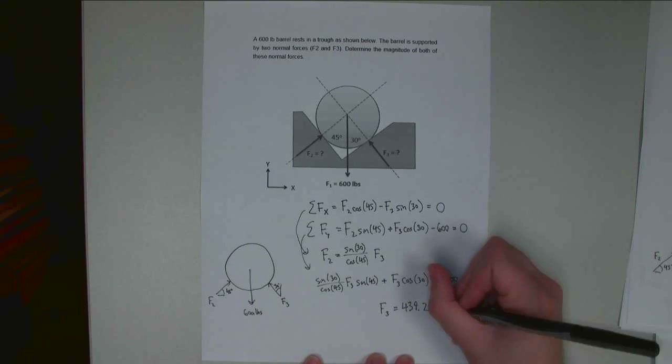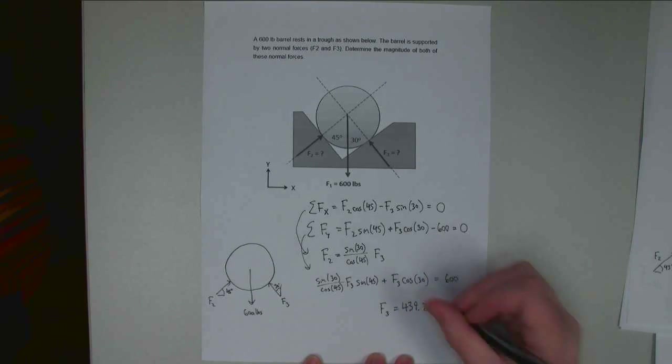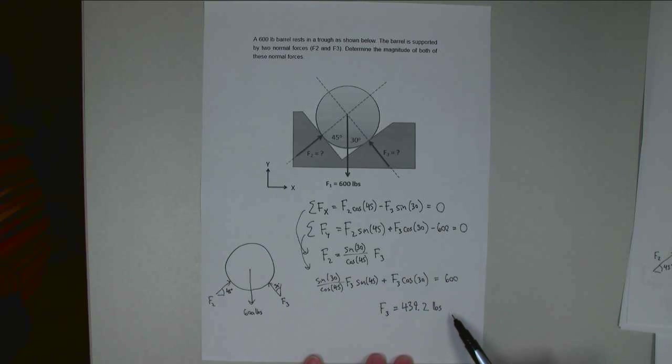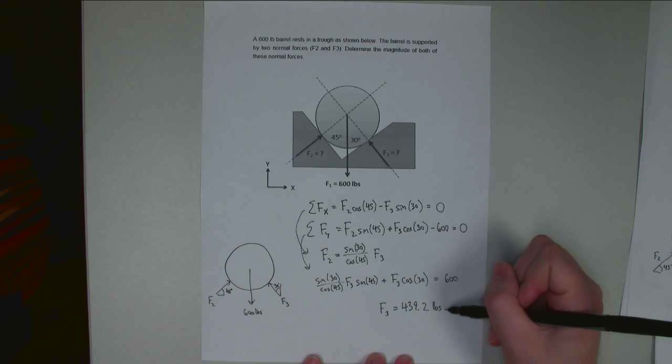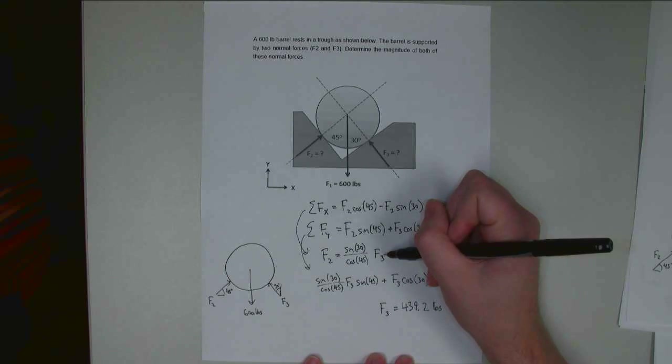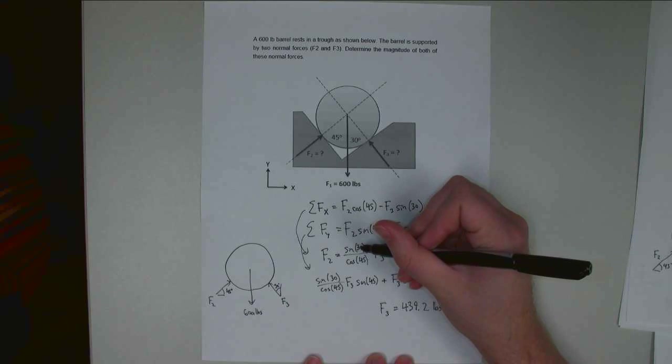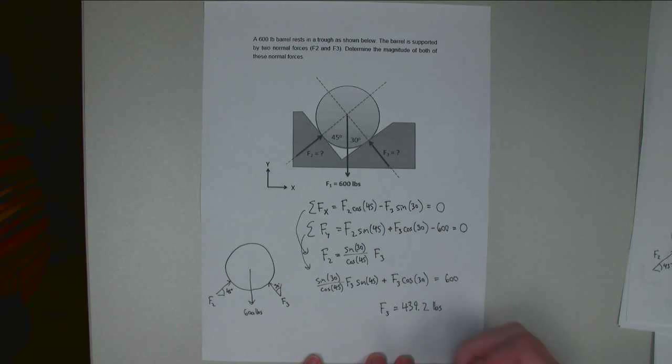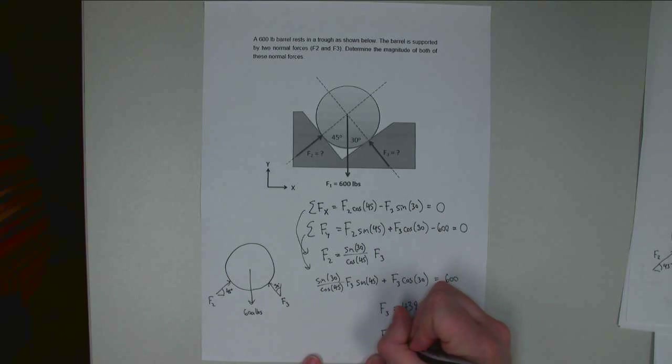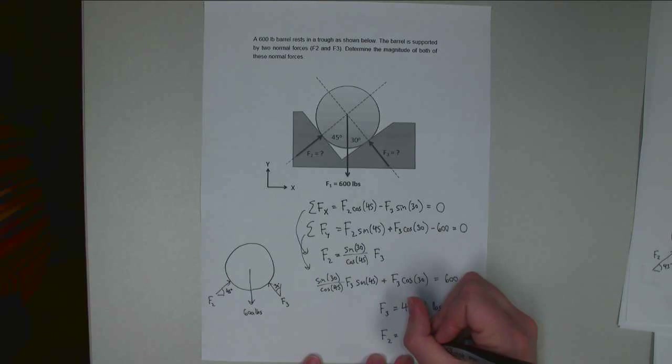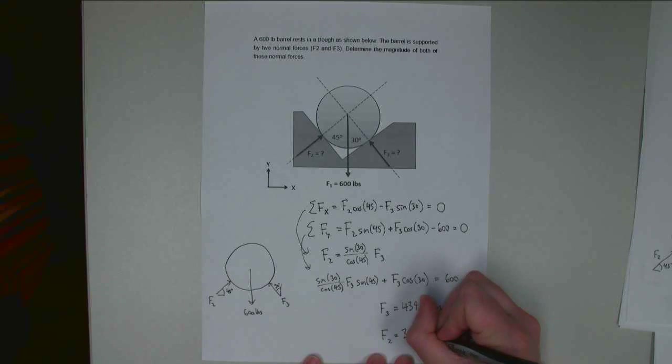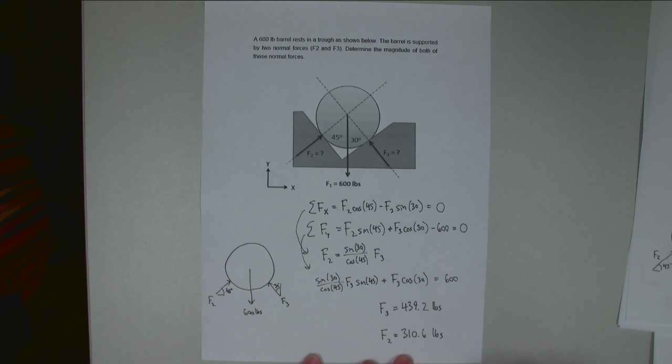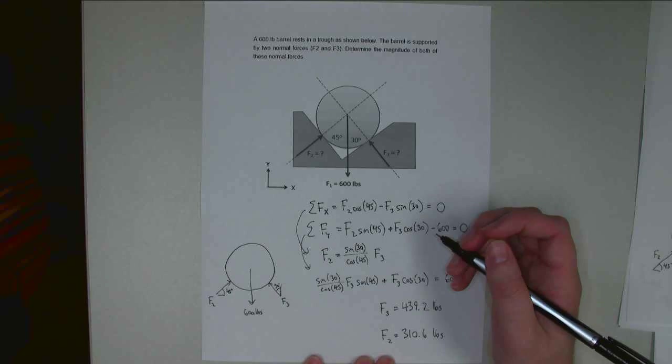And so once I solve for F3, I can plug this value for F3 back in up here, multiply by sine 30 divided by cosine 45, and I wind up with F2 being equal to 310.6 pounds. Alright, so with that I have solved for my two unknowns. Thank you for watching, and I hope to see you again.